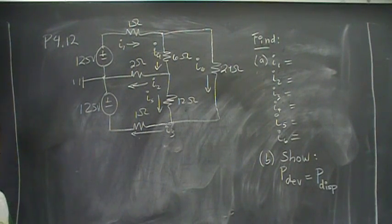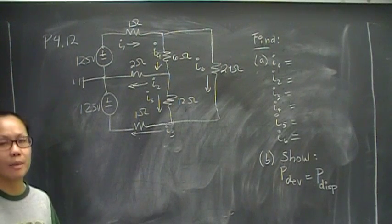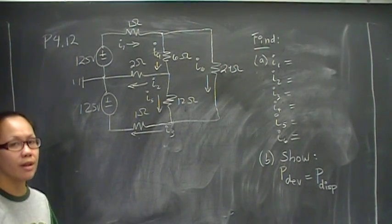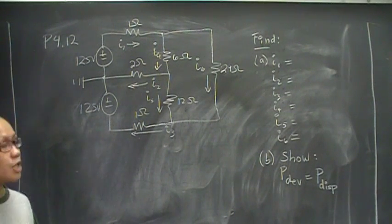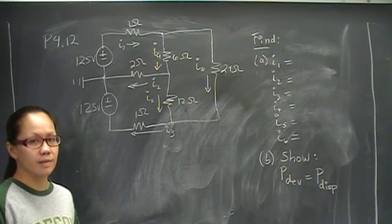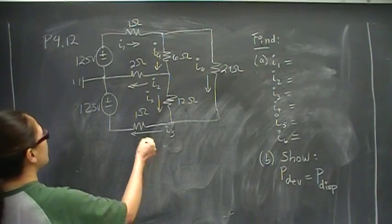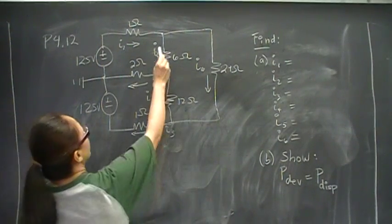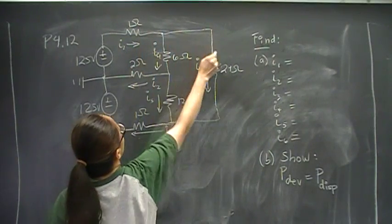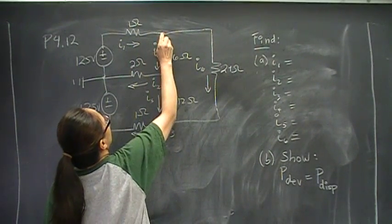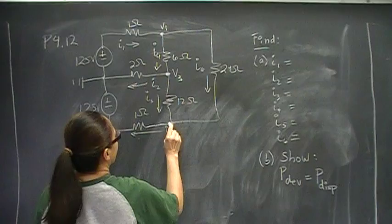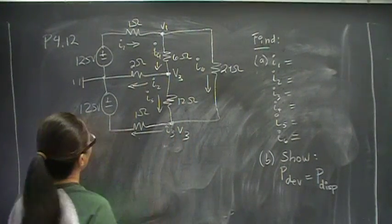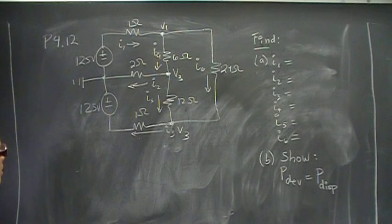We want to find essential nodes, and the requirement for this problem is that we have to use the node voltage method to find these currents. A node is where two circuit elements meet. An essential node is where three circuit elements meet. I'm going to take that and call that my V1. I have an essential node here, V2, and I have an essential node here, V3. Now we do our node voltage.